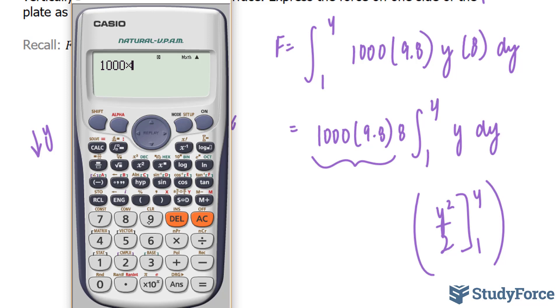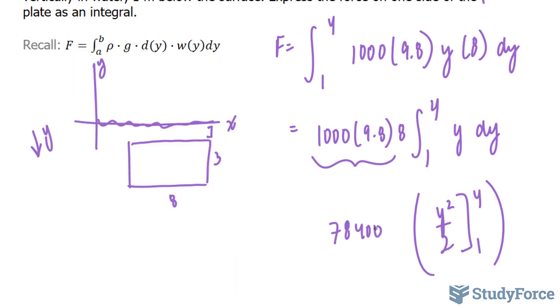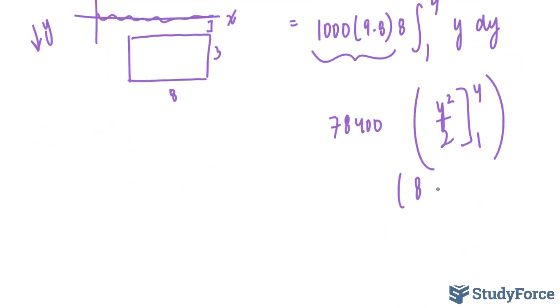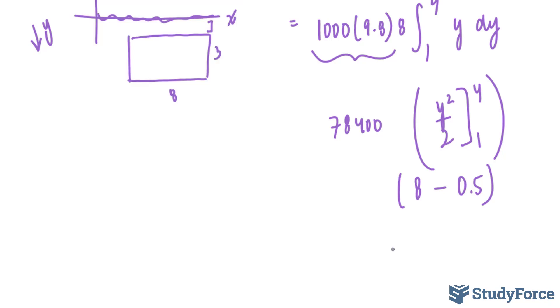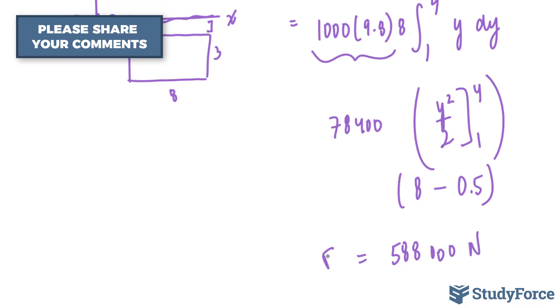Let's start by finding out what this is. 1,000 times 9.8 times 8, that gives us 78,400. And 4 to the power of 2 is 16, divided by 2 is 8. 16 divided by 2 is 8, and we'll subtract that from 0.5. So we have this number times 7.5, and that gives us 588,000 newtons. That's the force being exerted on this 3 by 8 plate.